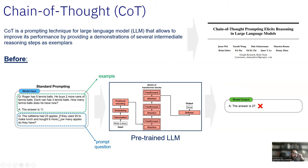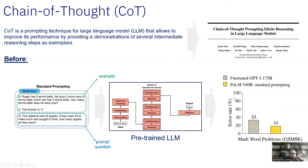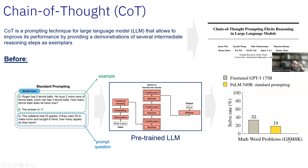Here we can see that the model, based on this example and question, was actually giving us the wrong answer. On the GSM8K dataset — which contains different math questions — the model had a low solve rate of about 33% for a fine-tuned GPT-3 175 billion, and PALM 540 billion parameters with standard prompting only got 18%. So we can see it's not doing that well on these types of reasoning problems.